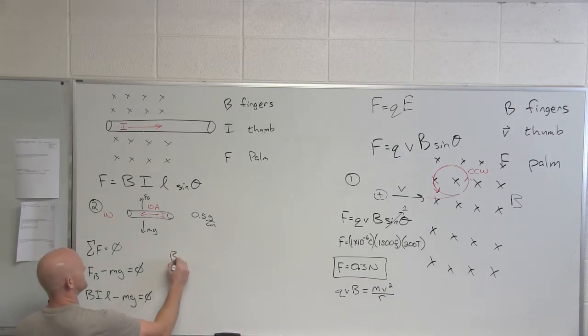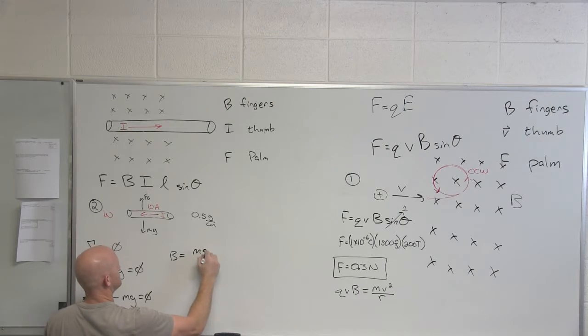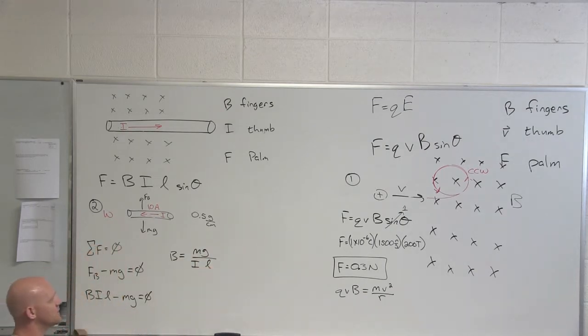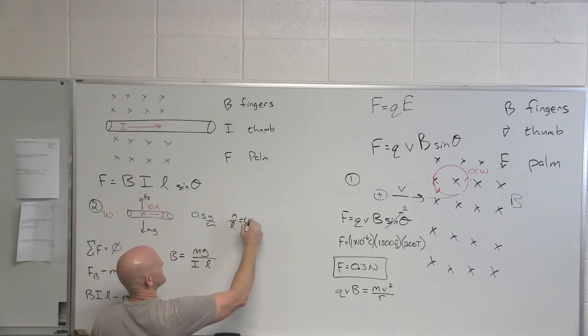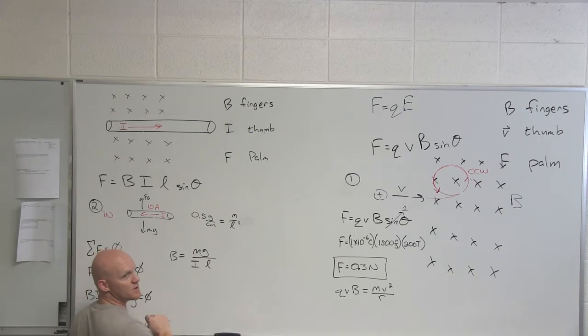Cool. What are we solving for in this case? Magnetic field. So if we do some rearranging here, your magnetic field is going to equal mg over IL. So do we know the mass of this wire? No. Do we know how long it is? No. What do we know in regards to that? Mass density. We know the mass per unit length is this 0.5 grams per centimeter. So we know that M over L is 0.5 grams per centimeter. So in this case, we know M over L as a whole.